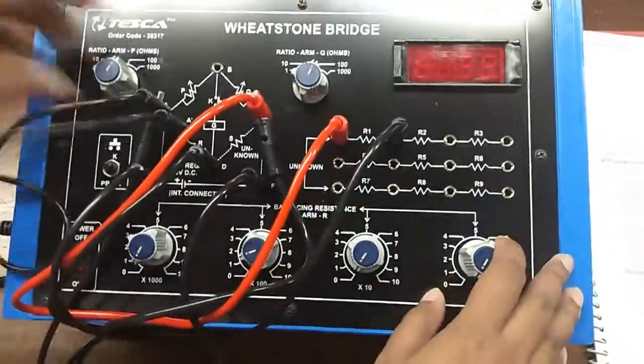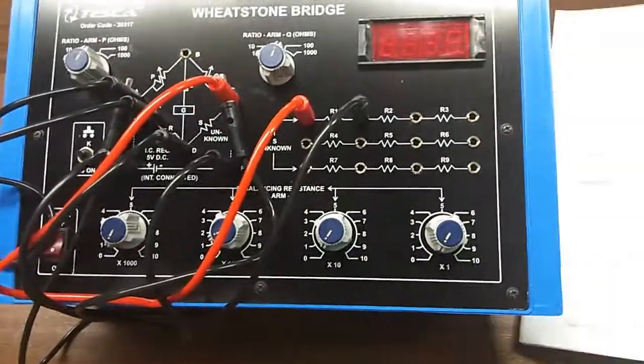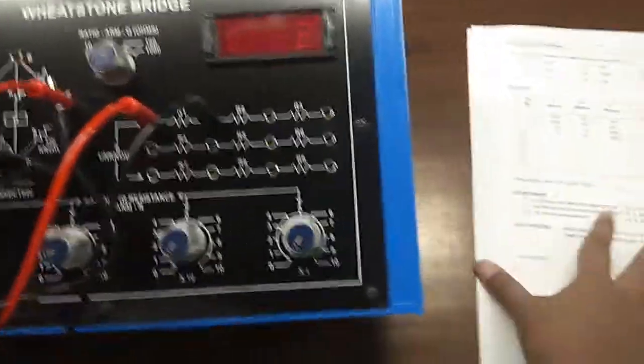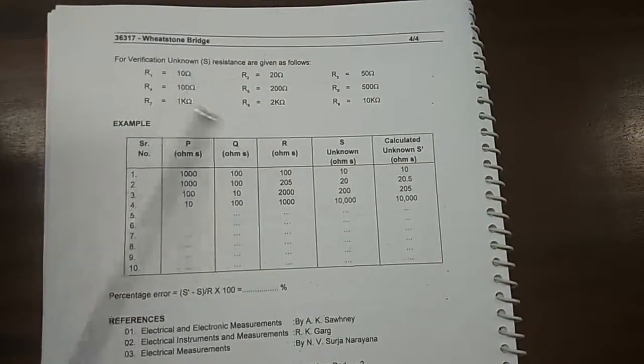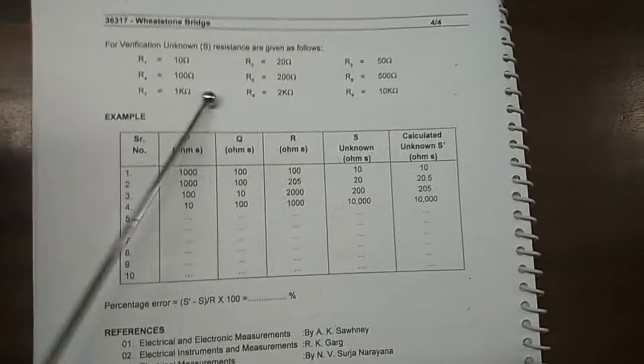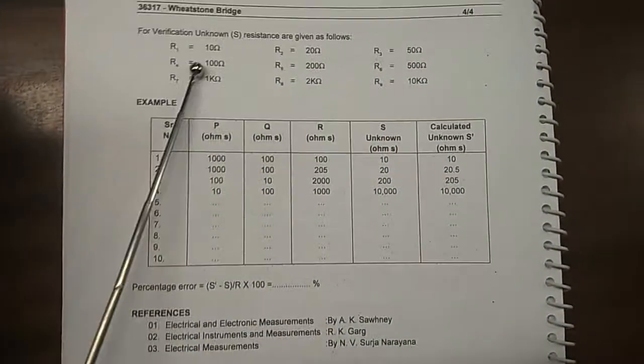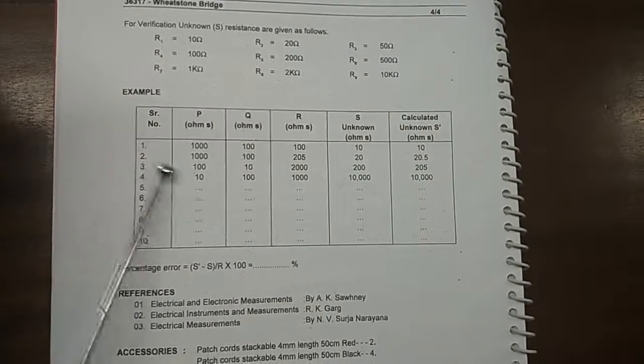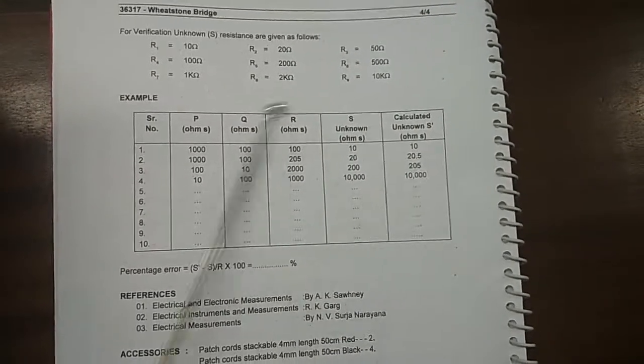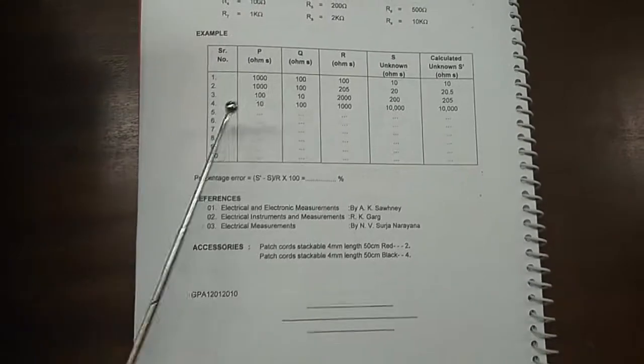Here for better understanding of the unknown resistance values, the resistance values are given here: R1, R2, R3, R4, and there is an example given. We will follow the first example to see the null deflection in the galvanometer.